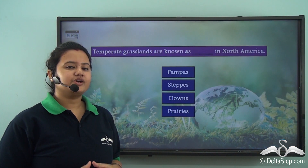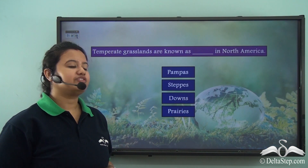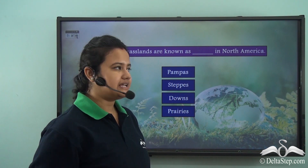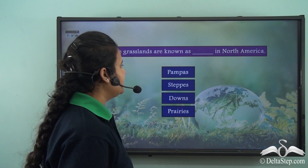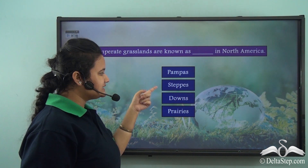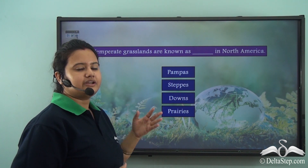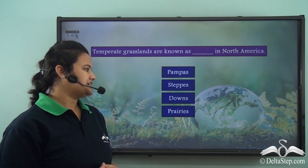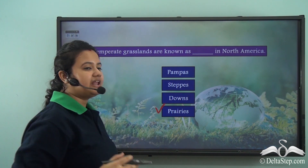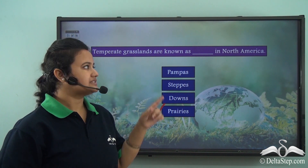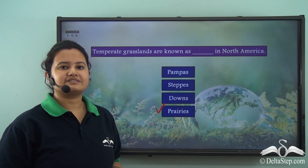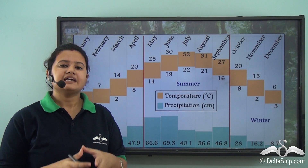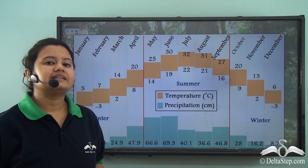Quick question: temperate grasslands are also known as what in North America — pampas, steppes, downs, or prairies? The correct answer is prairies.